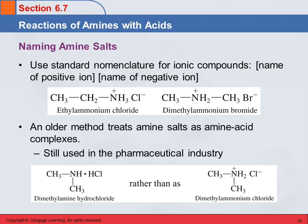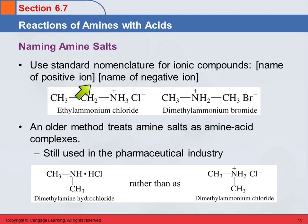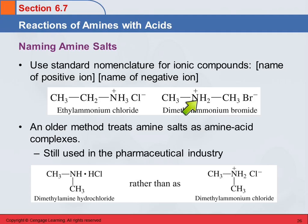Naming these follows the same pattern as naming inorganic ionic compounds, where you've got the name of the positive ion, a space, and the name of the negative ion. So this one is the ethyl ammonium ion — ethyl ammonium chloride. This is dimethyl ammonium bromide, because this ammonium has two methyl groups on it.